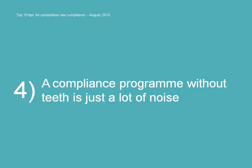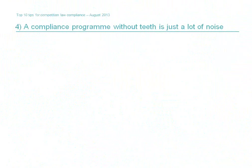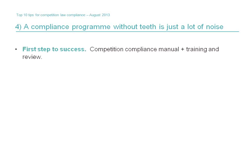Tip number four: a compliance programme without teeth is just a lot of noise. Creating a compliance programme is an excellent first step — it sets out and trains people on what is expected of them. However, it's worth noting that competition authorities don't even consider the existence of a competition compliance programme to be a mitigating factor should there be an infringement. That is why an effective compliance programme needs to be backed up appropriately.